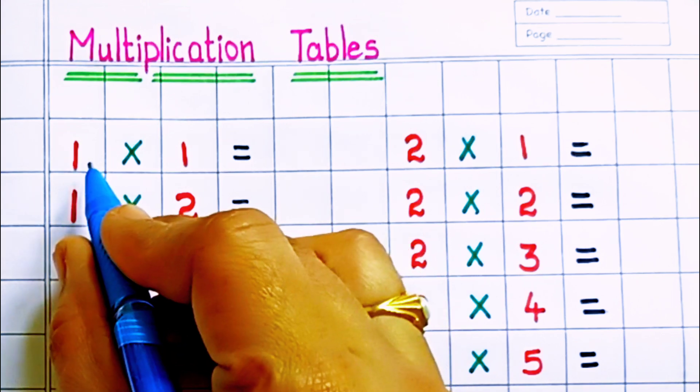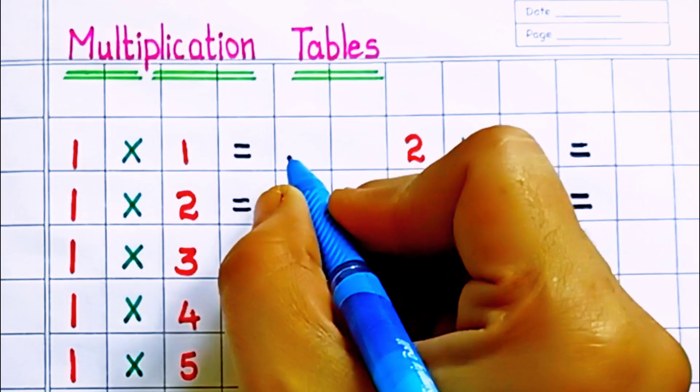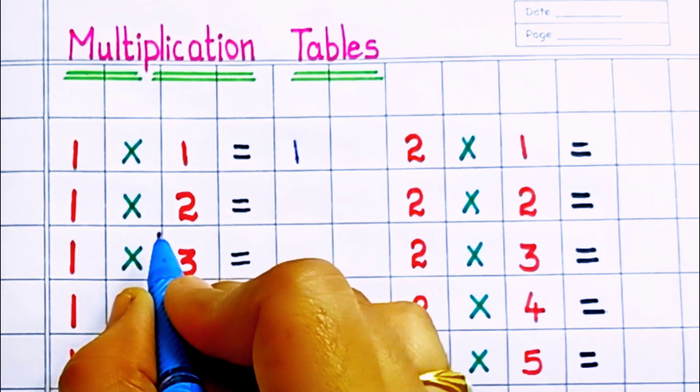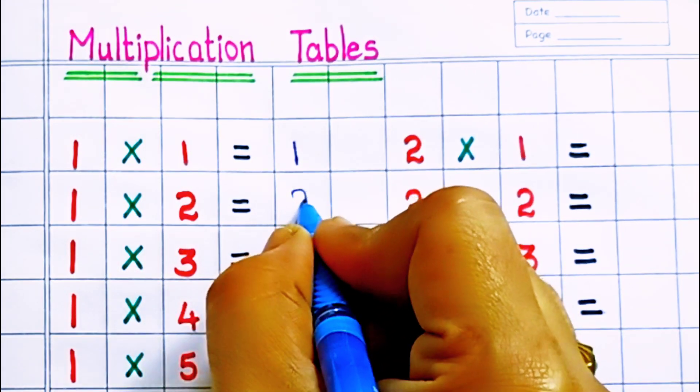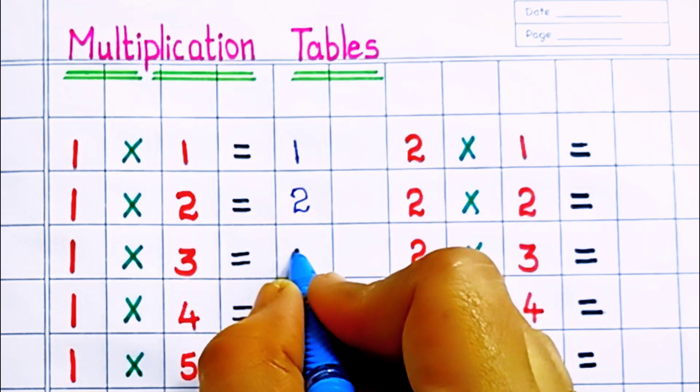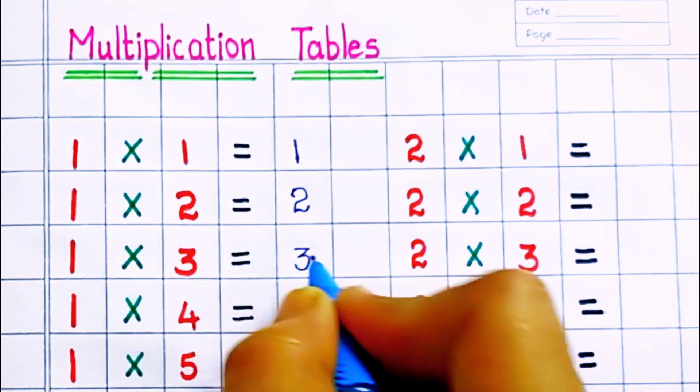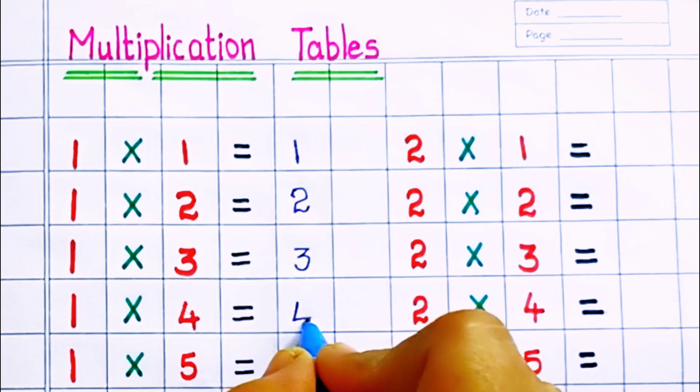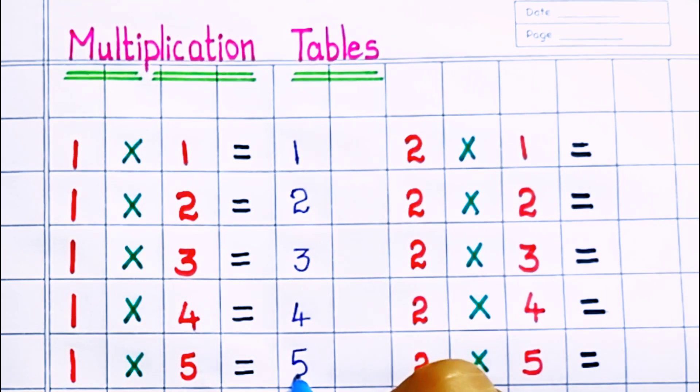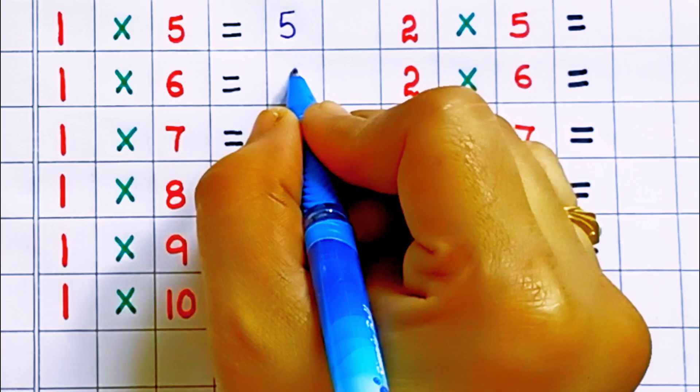And now let us start the table of 1: 1 times 1 equals 1, 1 times 2 equals 2, 1 times 3 equals 3, 1 times 4 equals 4, 1 times 5 equals 5.